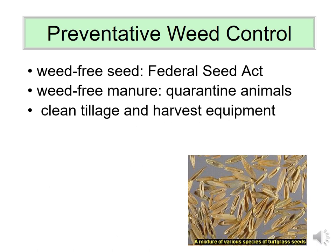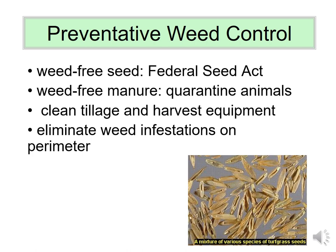Clean tillage and harvest equipment is an obvious but often overlooked prevention technique. Dirt clods on equipment moved from field to field will spread whatever weeds were in one field to the next. Cleaning farm equipment and harvest equipment is an important part of prevention. Limiting weed infestations on the perimeter is also important, especially for weeds from the Asteraceae family — such as dandelion, horseweed, or bristly oxtongue — whose seeds blow in on a pappus, making perimeter management very effective at keeping them off the farm.